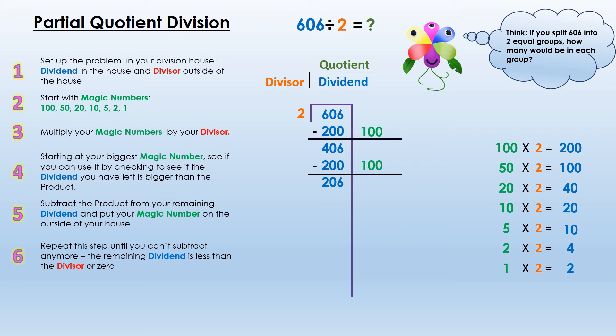Now I think: can I give 100 to each of those two groups again, giving a total of 200? Can I use it or lose it? I can use it again! I subtract 206 − 200 to get 6, and I extend the line to the right of my house to organize those partial products. I can see I have given 100 to each of those two groups three times already — 100, 100, 100.